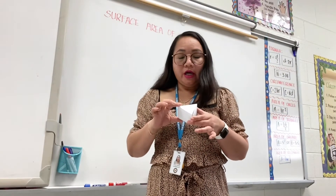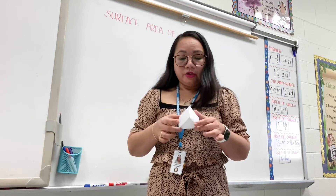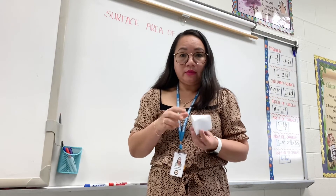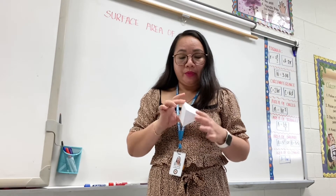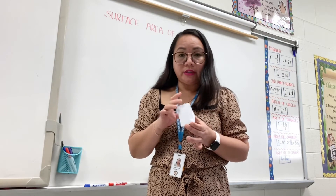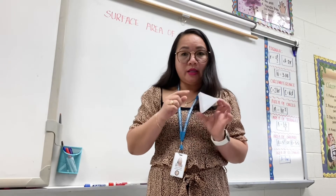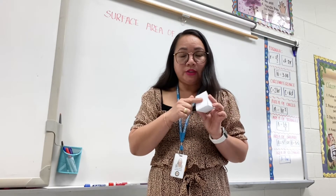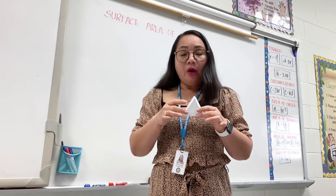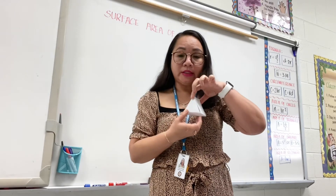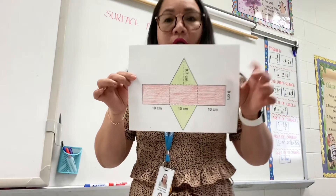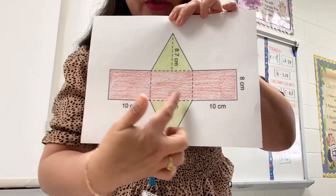Now I have here a triangular prism. As you can see, the bases are triangles — this is base one and this is base two. It also has lateral faces: this is lateral face one, the other side is lateral face two, and this one is lateral face three. If I decompose this triangular prism, this is how it looks — we have three lateral faces and two triangular bases.